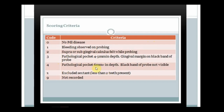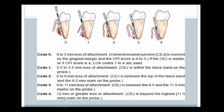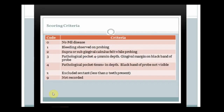LOA assessment in CPI is triggered under two conditions: either the CEJ (cemento-enamel junction) is visible, or the CPI score is 4. Loss of attachment codes: Code 0 = LOA 0–3 mm; CEJ covered by gingival margin; CPI score 0–3. Code 1 = LOA 3.5–5.5 mm; CEJ is within the black band. Code 2 = LOA 6–8 mm; CEJ is between the upper edge of the black band and the 8.5 mm ring. Code 3 = LOA 9–11 mm; CEJ is between the 8.5 mm and 11.5 mm rings. Code 4 = LOA ≥12 mm; CEJ is beyond the 11.5 mm ring.